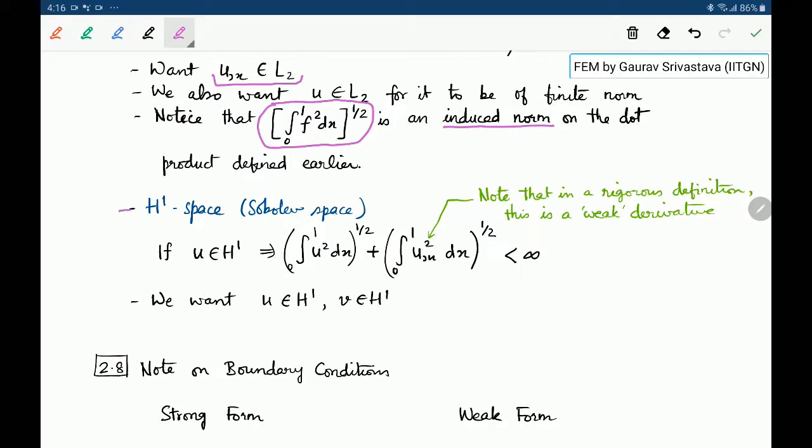Another space which will be of use to us is the H1 space. This is the first Sobolev space. The idea here is that if u is in H1, it implies that integral of u squared plus integral of u_x squared is less than infinity. So basically in loose terms one may say that if u and u_x both are in L2 space, u will be in H1 space. We want u and v both to remain in H1 space for the bar problem. If the problem changes, these definitions will change.